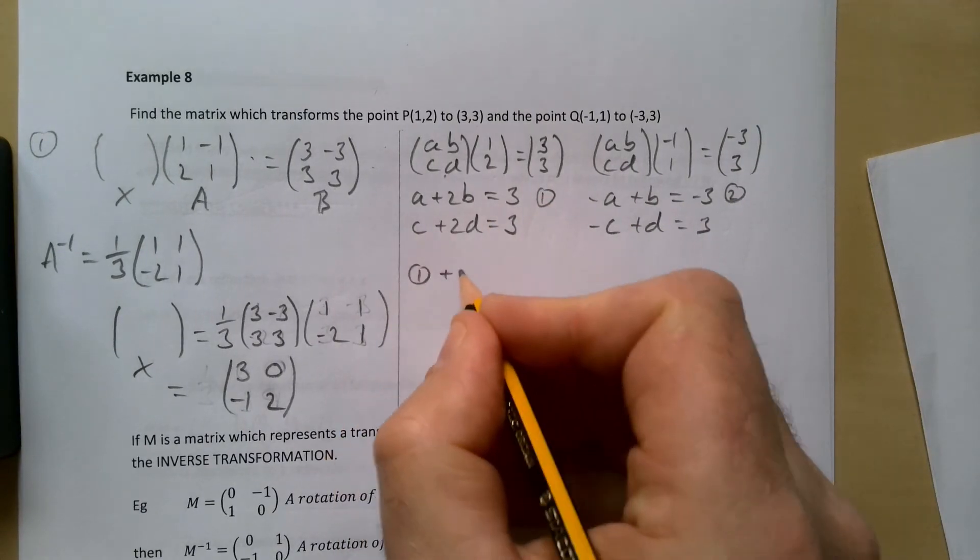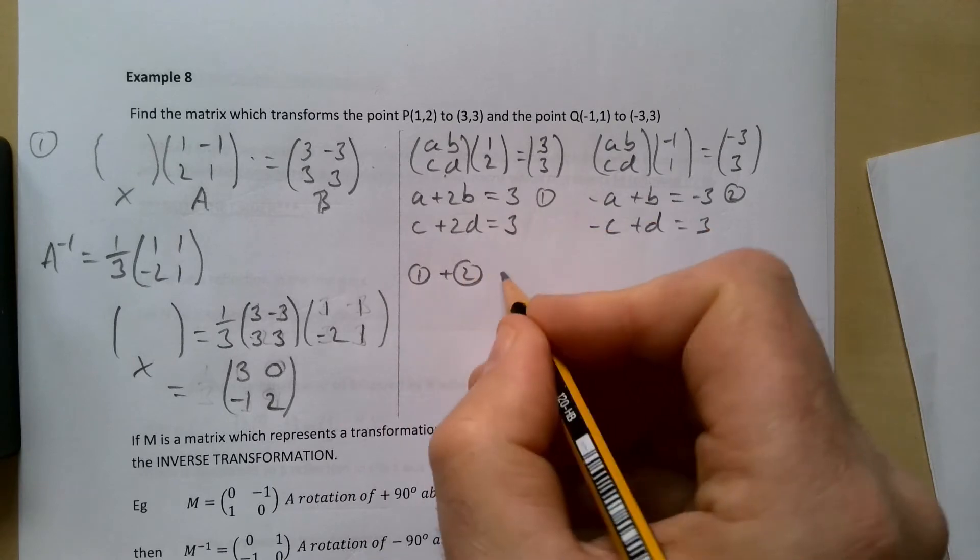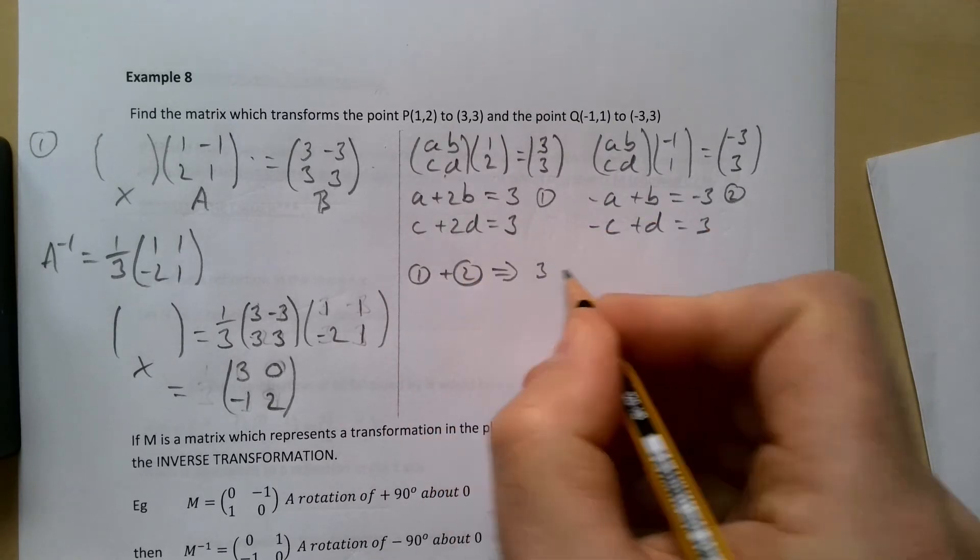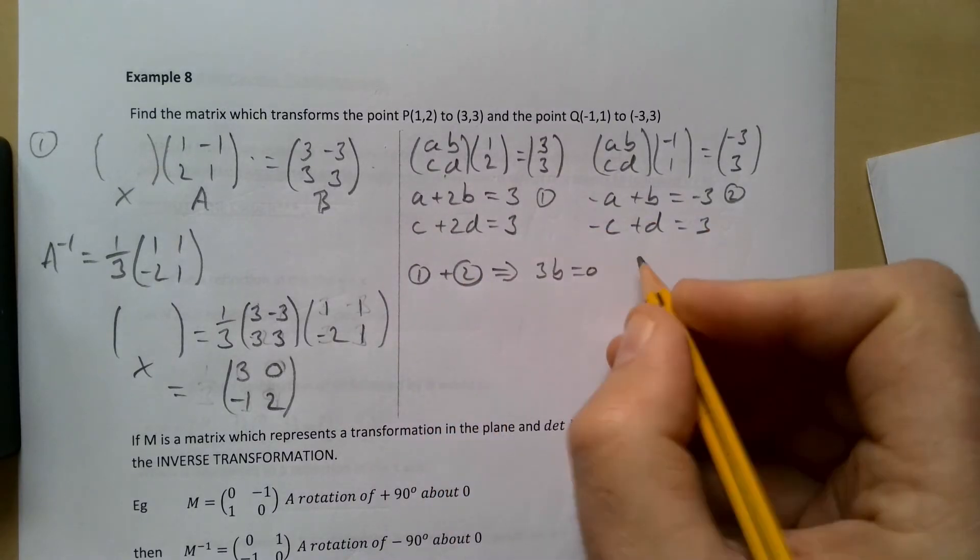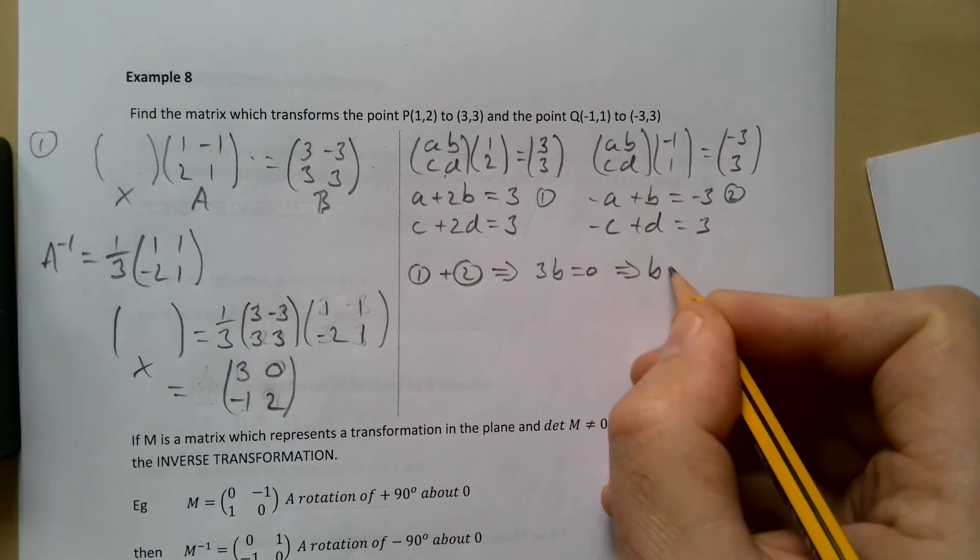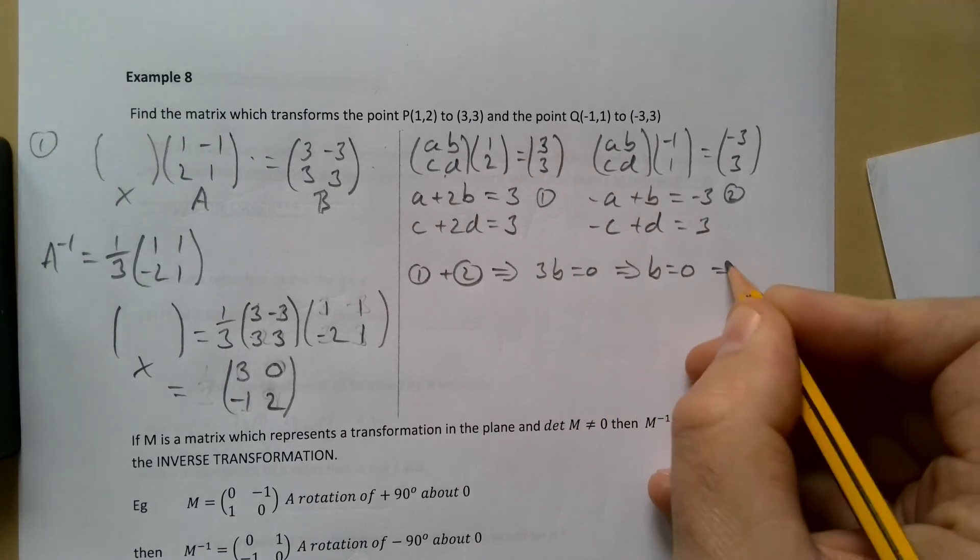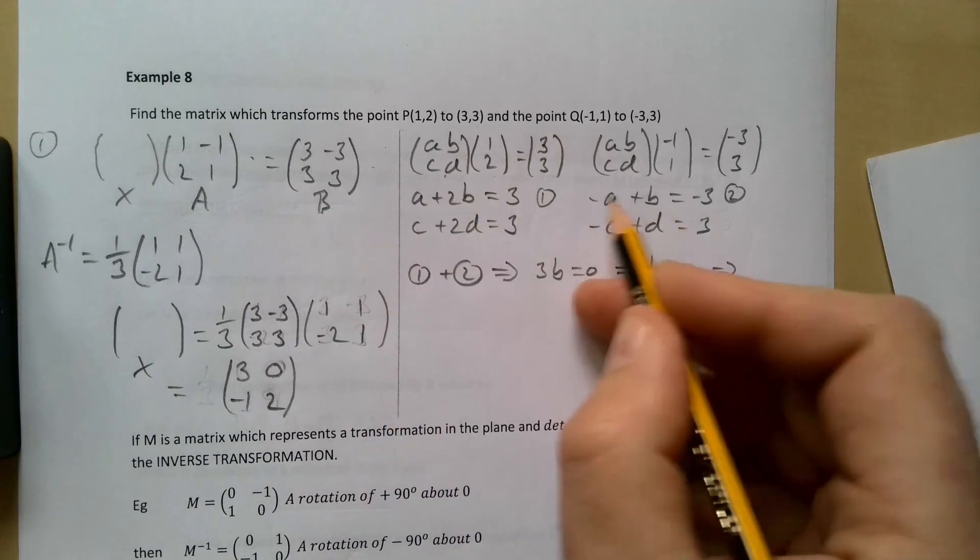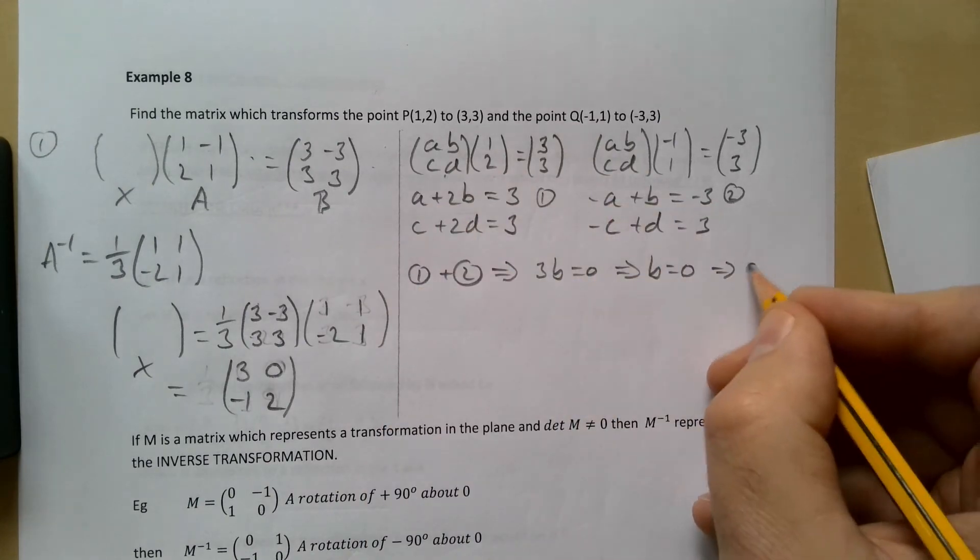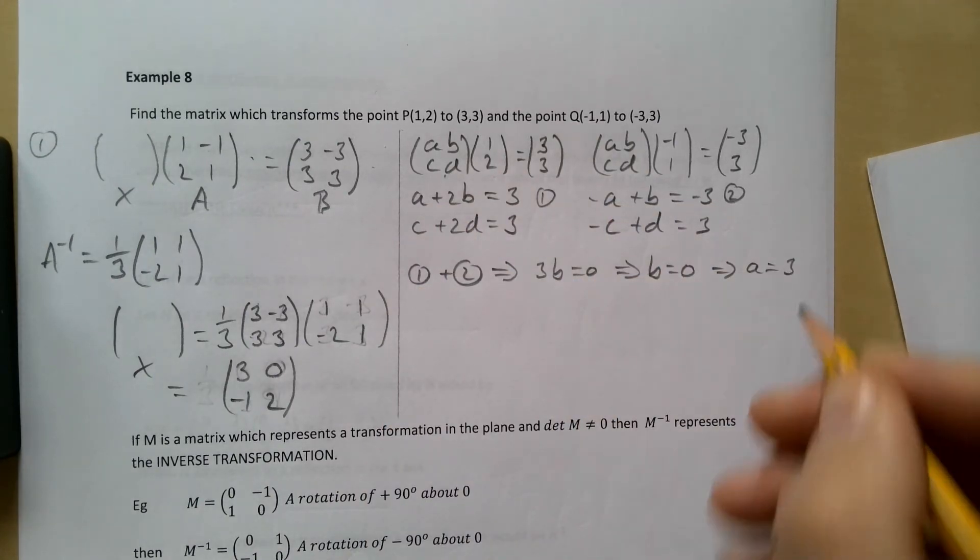So 1 plus 2 is going to give me 3b equals 0, which obviously gives me that b is 0. If b is 0 and you put it into this one or this one, you of course get a equals 3. So there's the a and the b worked out.